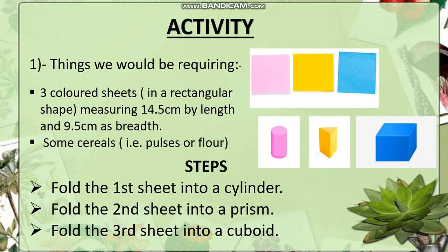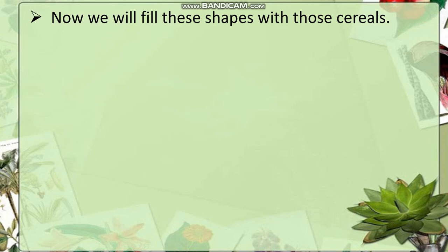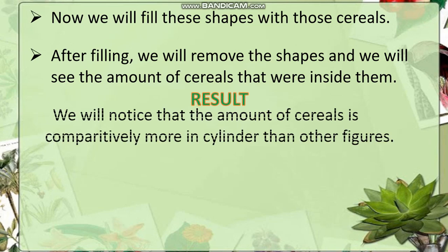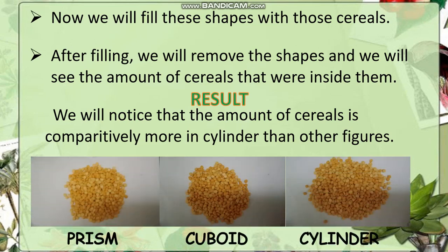These are the pictures that would help you to give a visual representation of the steps. Now we will fill these shapes with those cereals. After filling, we will remove the shapes and we will see the amount of cereals that were inside them. This would help us to give the representation of the volume of the figures. The final result is that we will notice that the amount of cereals is comparatively more in the cylinder than in other figures.